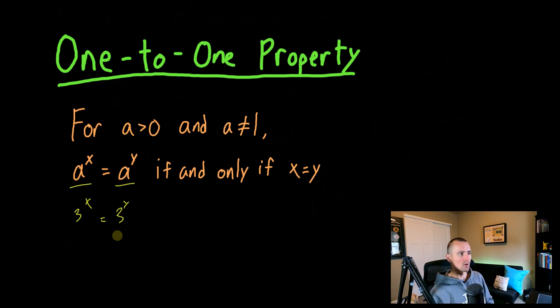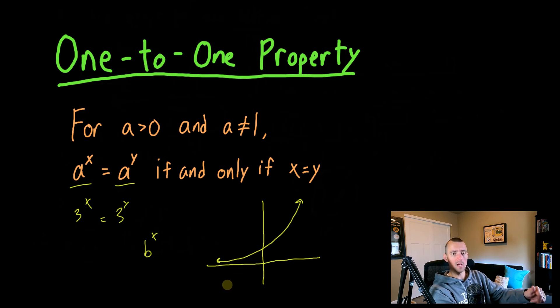So basically the reason it's called the one-to-one property is because any exponential function, any b to the x power, b to the y power, whatever the case is, this is a one-to-one function, which means on a graph it looks something like this. Roughly it's going to have this kind of shape. It's a one-to-one function, which means for any input there's one output, and for any output there's only one input that will get you there.